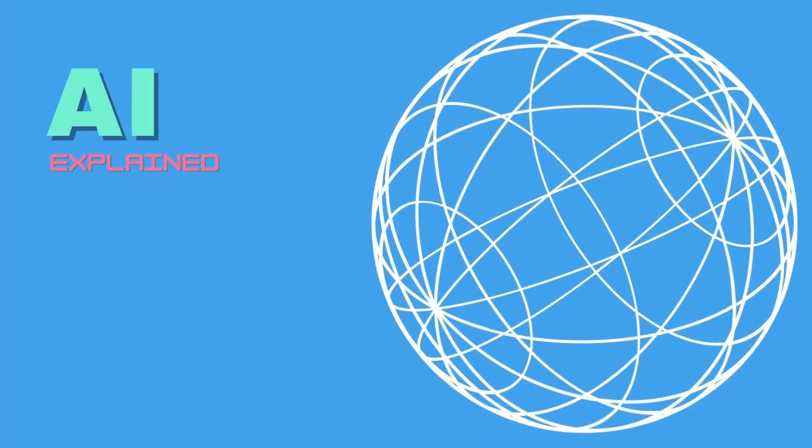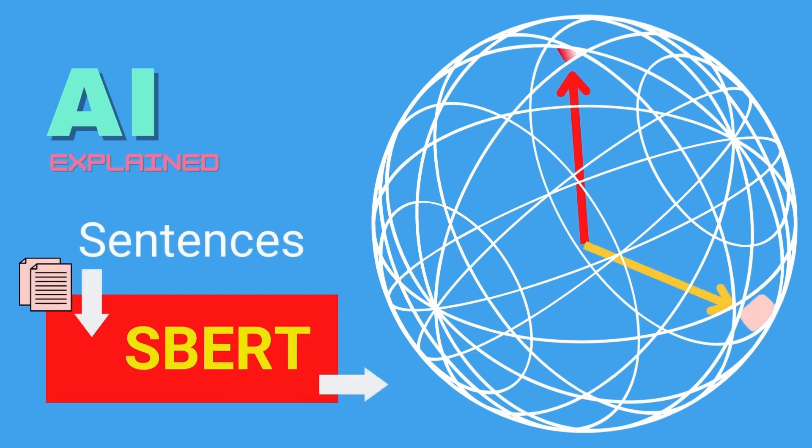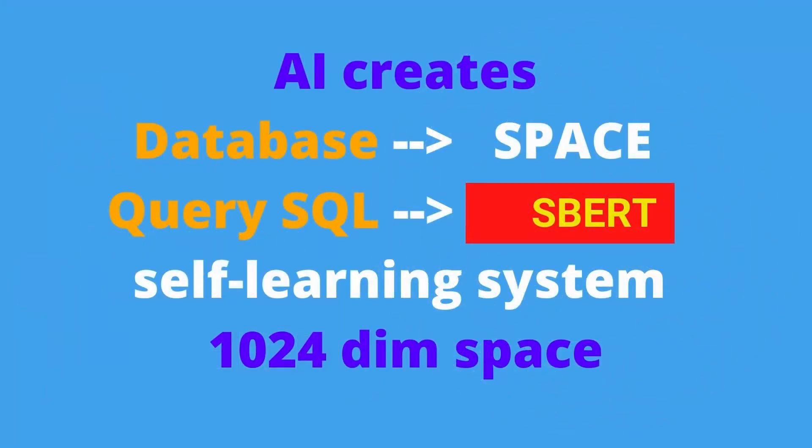And we have a powerful engine, a sentence transformer, that creates this space. But also, if we have an input to this sentence transformer, it converts each sentence in a vector. And it shows us where, if you get 1,000 new pages, where they live.